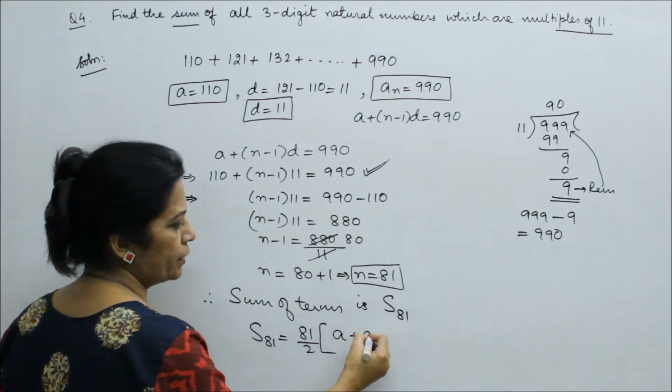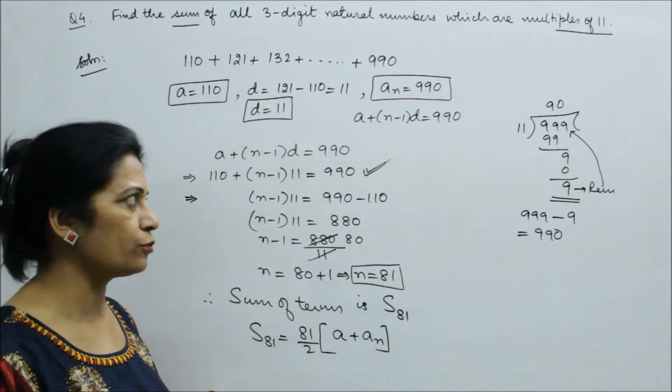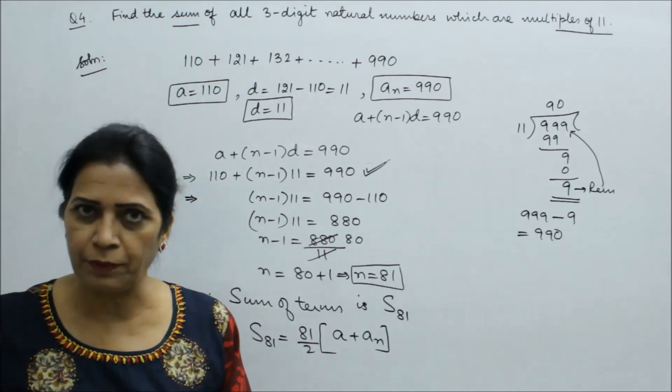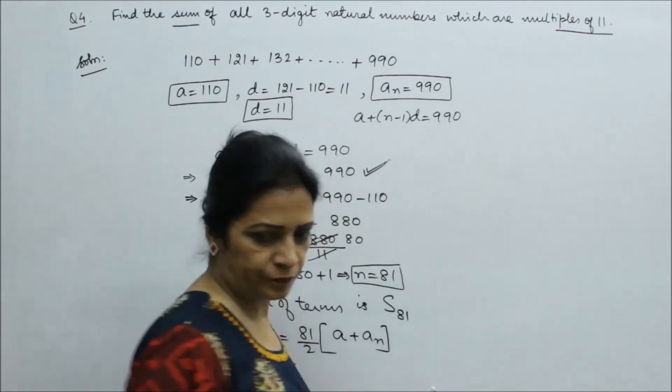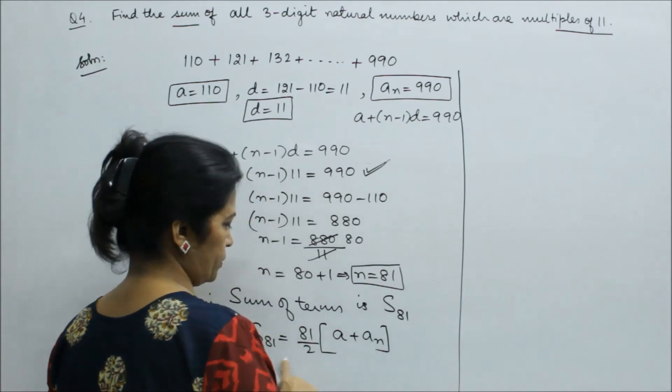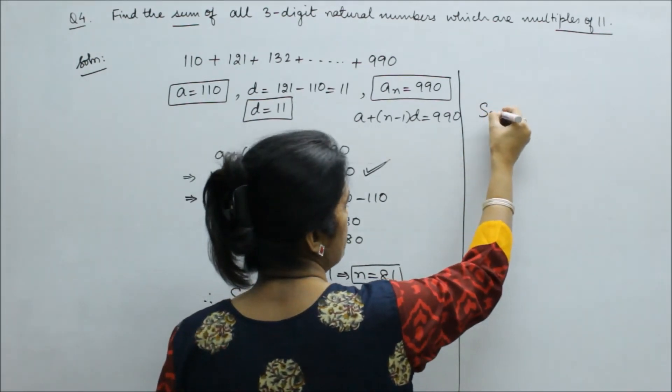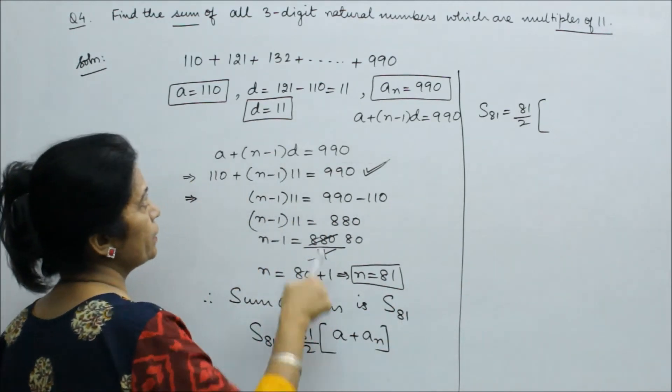Do we have a and last term? We have both, so we will apply this formula. S81 equals 81 divided by 2 times, and how much is a plus an?